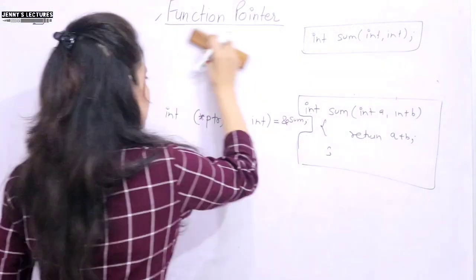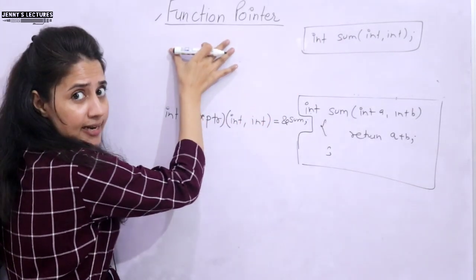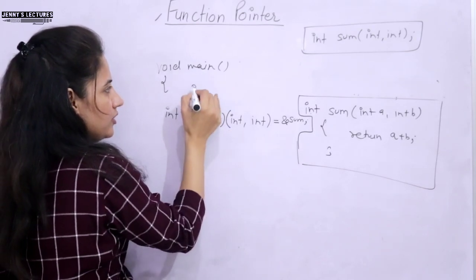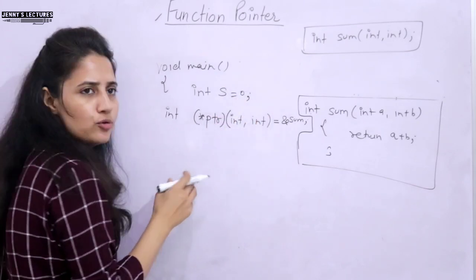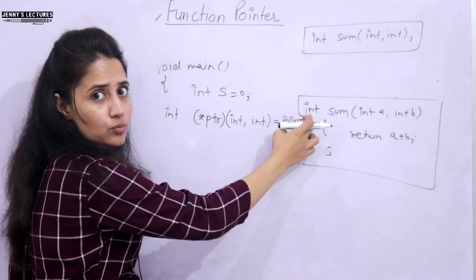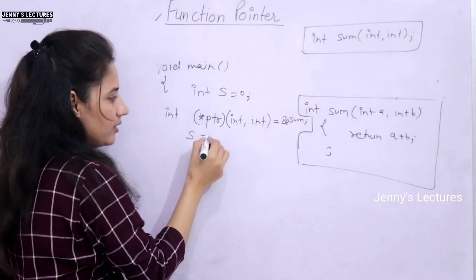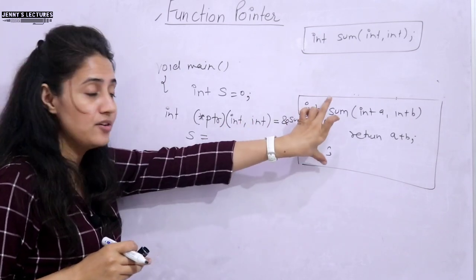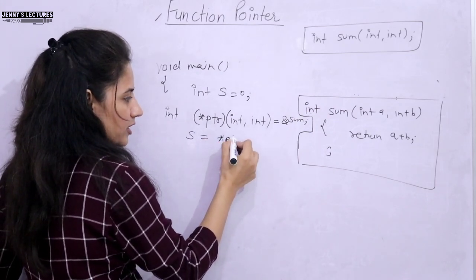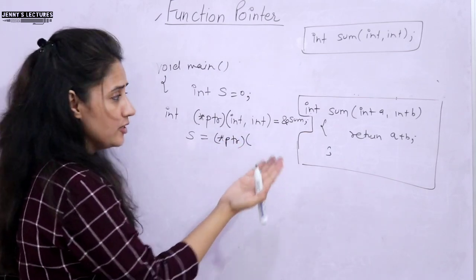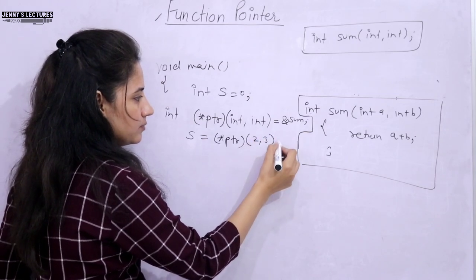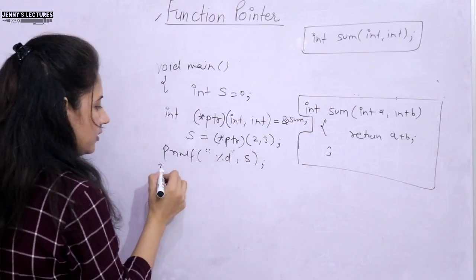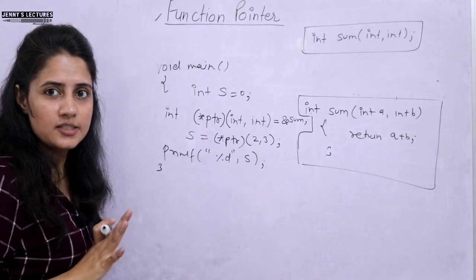Now let's write a program. In the main function first we are declaring it. In main we are writing the main function, and we'll take a variable s in which we are going to store the result because the function returns an integer value. When we call this function, we store the result in s. We will not call this function using the function name — we will call it using the pointer name, because the pointer is now containing the address of this function.